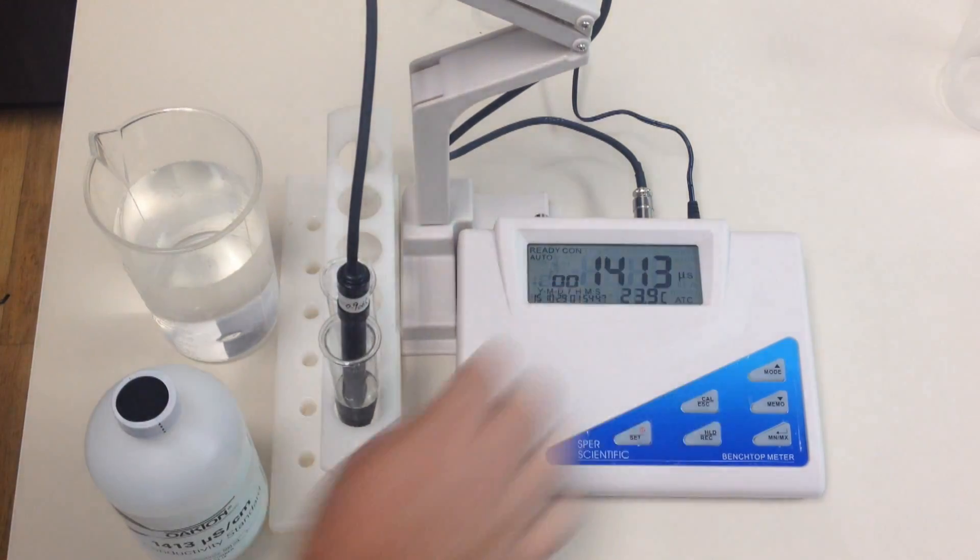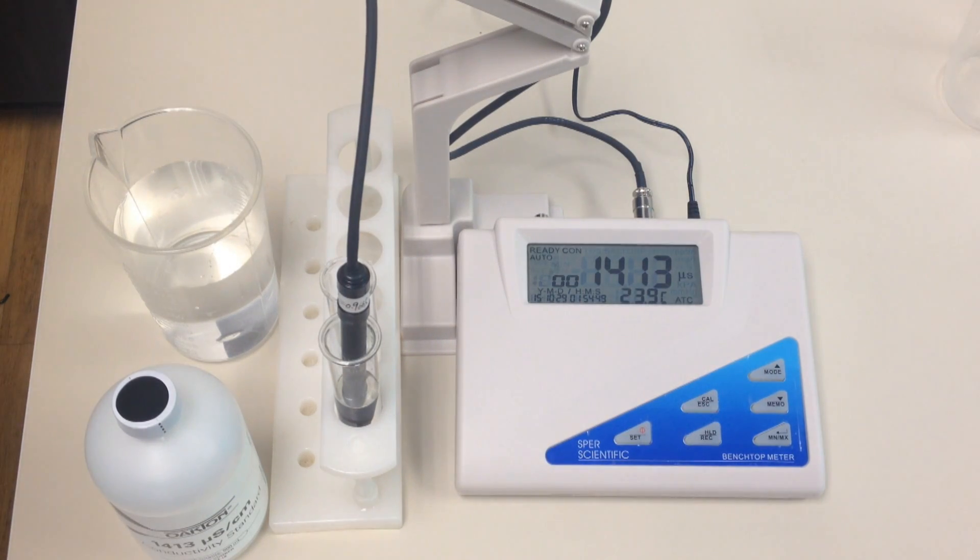Let's say you got an error message, such as error 17 is an example. For any of the benchtops, any time you get an error message, you need to reset them back to the factory settings. This information is found on page 56 of your manual, and it works the same for any of the meters.